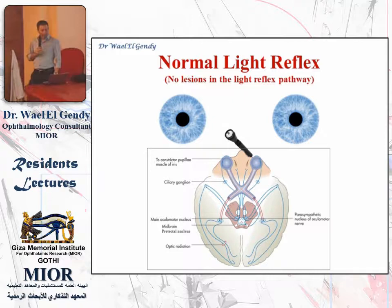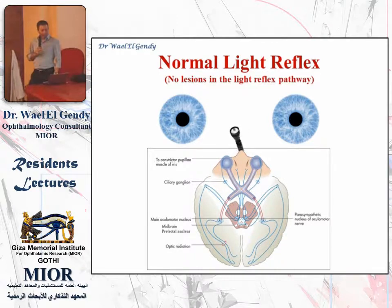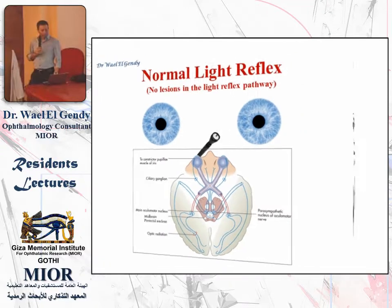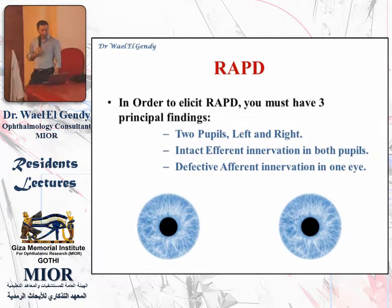Our first example is the normal light reflex when you're swinging your flashlight between both eyes and you have no lesions in the visual pathway or the light reflex pathway. The pupils will both be constricted in response to the light, and when you swing the flash from left to right, you will see no movement in the pupils. The pupils are both constricted — you will see no dilatation or re-constriction because the pupils are constricted by the direct and the consensual reflex at the same time.